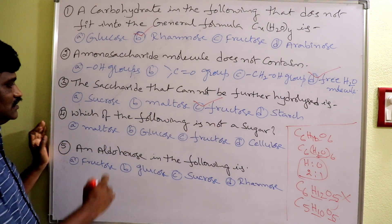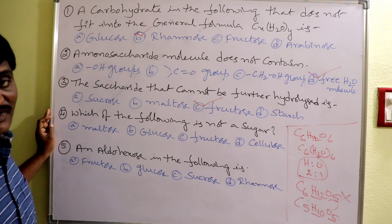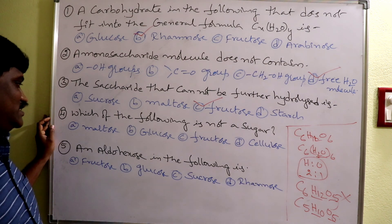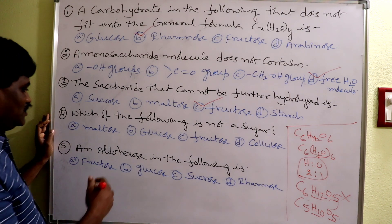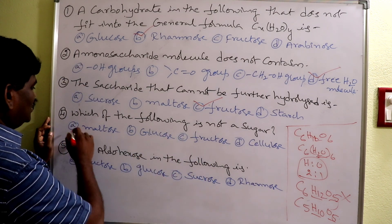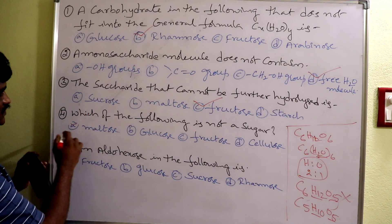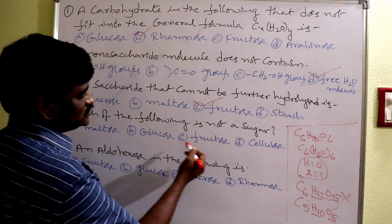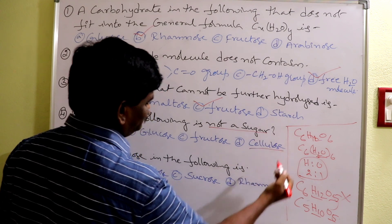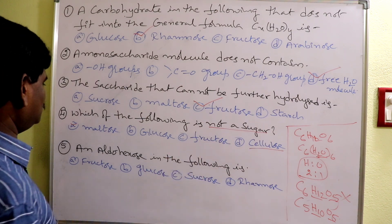Next question: which of the following is not a sugar? Sugars are carbohydrates which are sweet in taste, crystalline, and soluble in water. The options are maltose, glucose, fructose, and cellulose. Cellulose is the answer — it is a polysaccharide, insoluble in water, and tasteless. So cellulose is not a sugar.